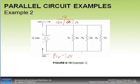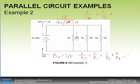Using the reciprocal formula: 1/RT = 1/R1 + 1/R2 + 1/R3 and so on. So 1 over 1 ohm equals 1/4 plus 1/2 plus 1/R-unknown.